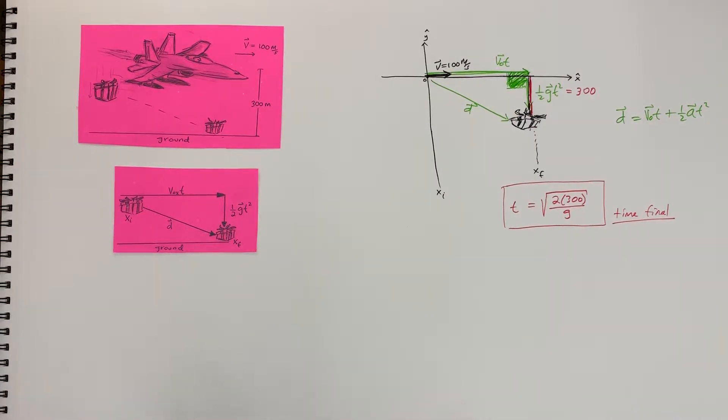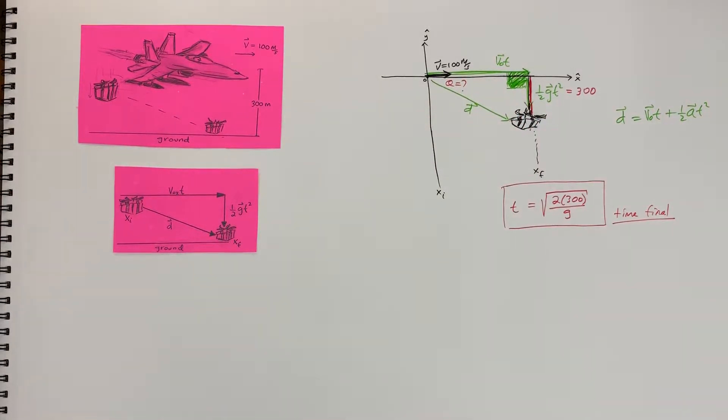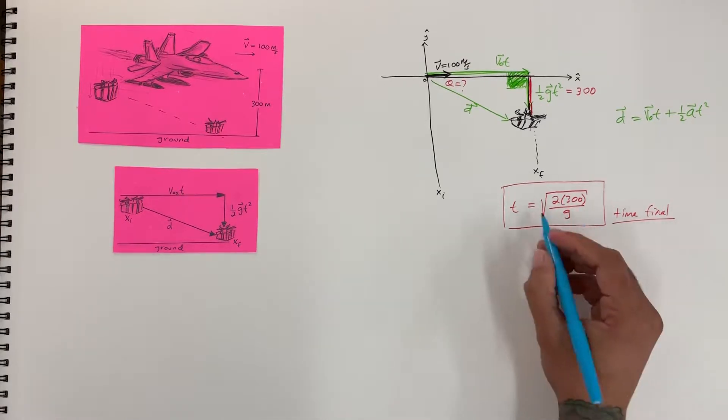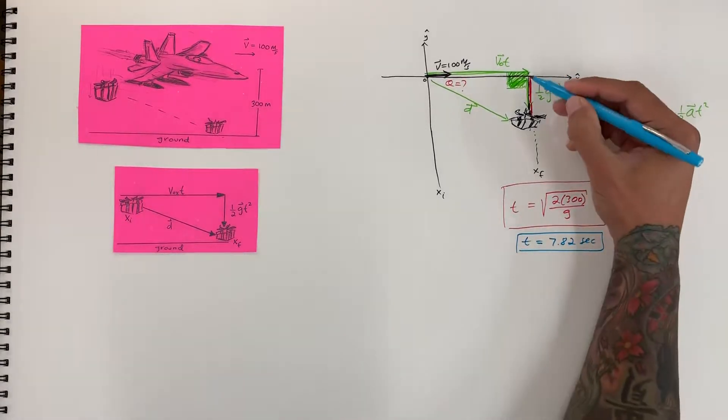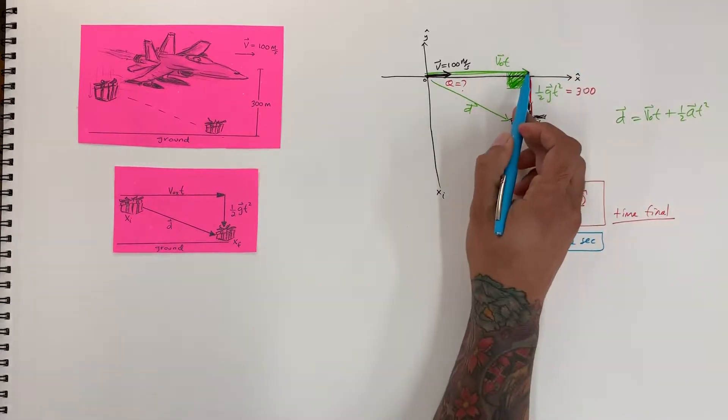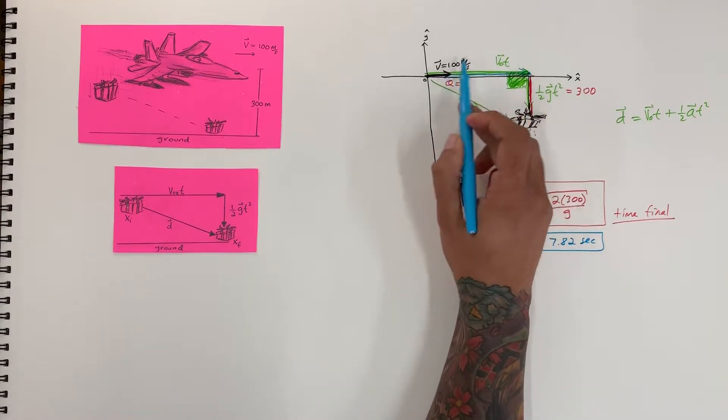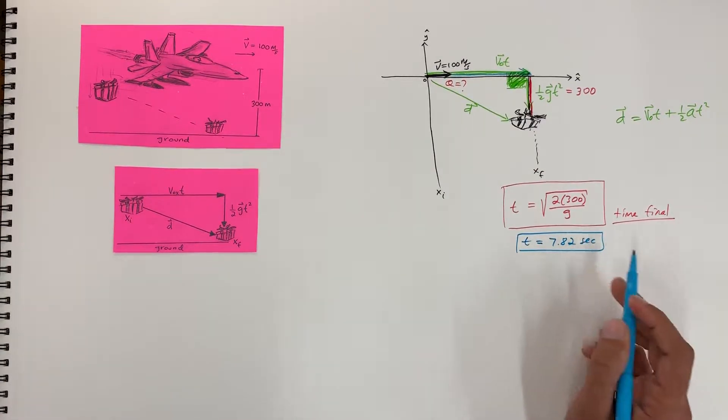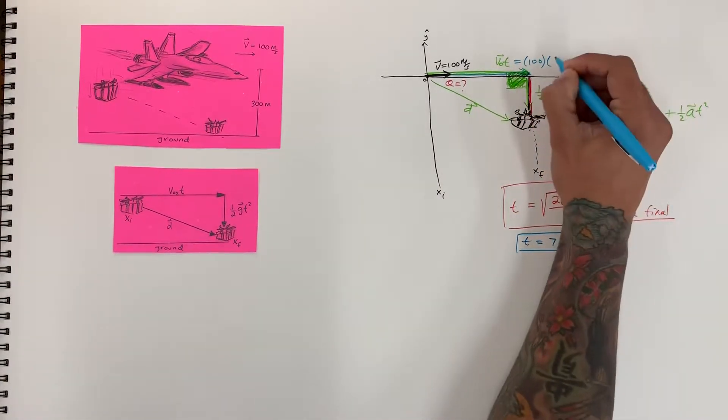Okay, so what angle did it fall at? Okay, that's another question we could ask. And let's see how we can find that. So now that we have time final, putting this in the calculator, we're going to get t is equal to 7.82 seconds. So now that we have time final, we also have velocity times time, which is this vector up here. So velocity initial is 100, and the time is 7.82 seconds. So this vector up here is 100 times 7.82.